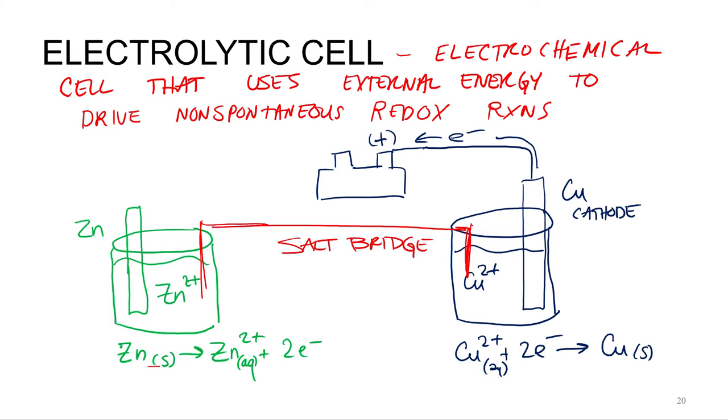You want to pull those electrons back out of copper. So instead of copper being reduced, when it's recharging, it's going to be oxidized. So now it's not my cathode, it's my anode.